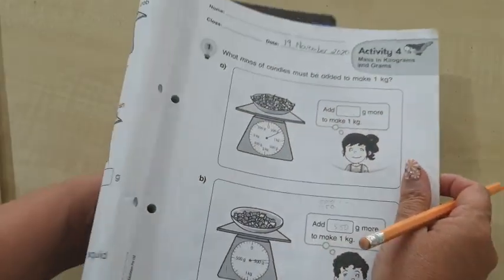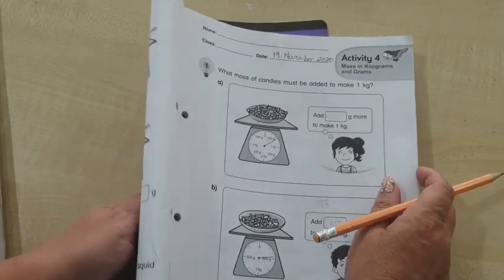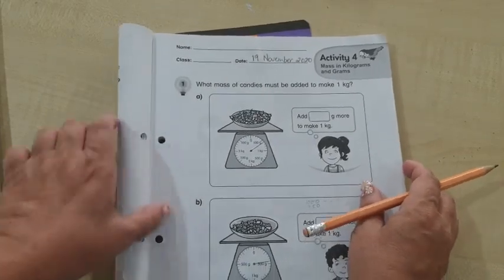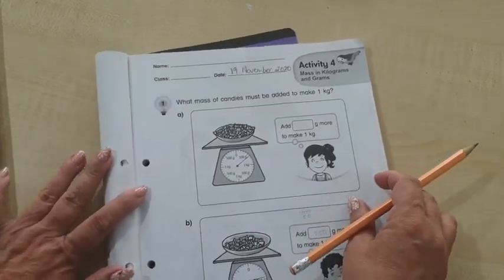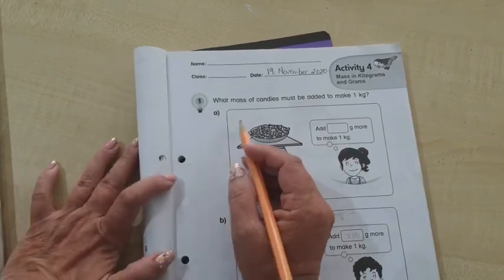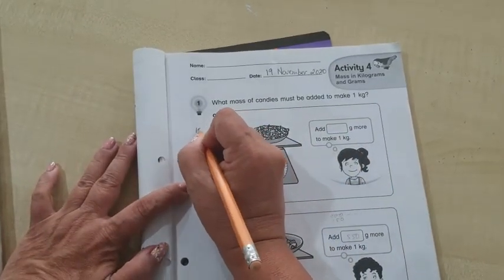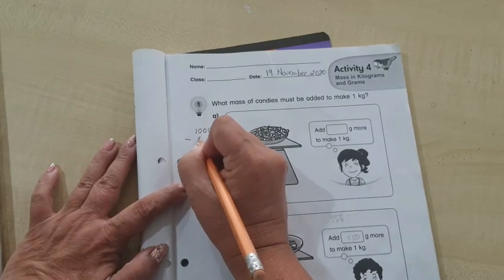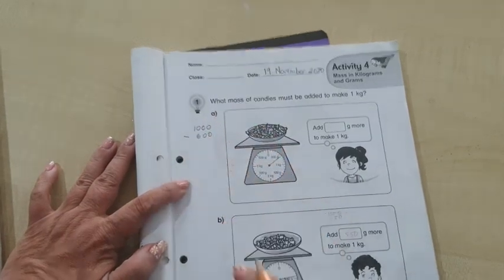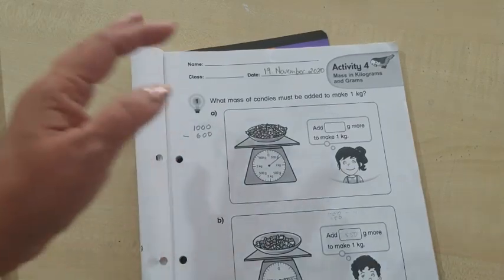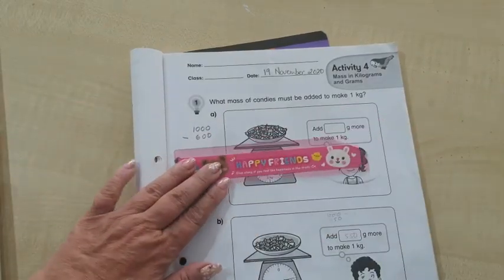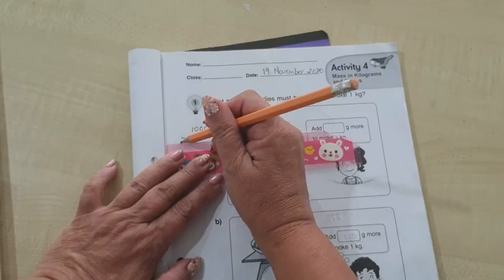Now they ask us to make 1 kg. 1 kg is 1000 grams. So how much more is to be added to make 1000 grams? So 1000 minus 600. Please do the working on the side as I have done.